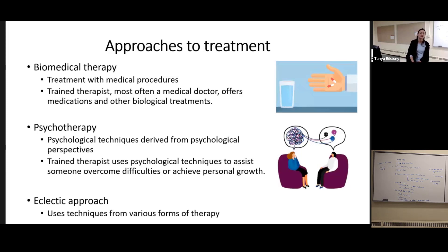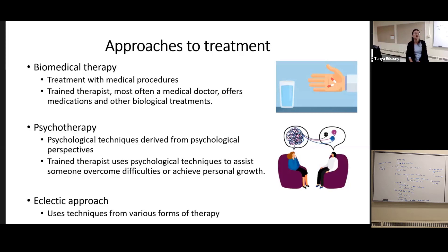Some of these problems sound kind of biological: sleep deprivation, poor nutrition, nutritional sensitivities, maybe deficiencies. Some of them sound psychological: burnout from stress, relationship issues. And some of them sound like there's a social or cultural level — isolation, exclusion, discrimination. Different kinds of psychologists tend to specialize in different levels of a problem.